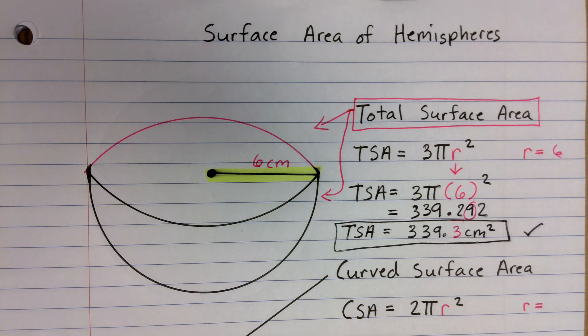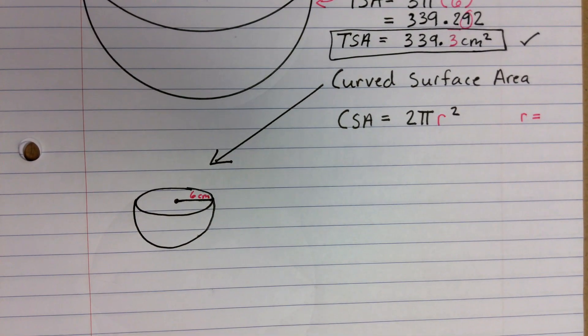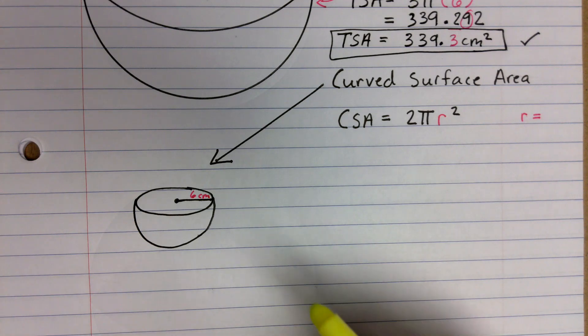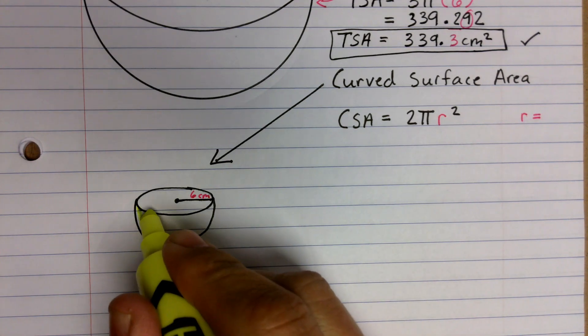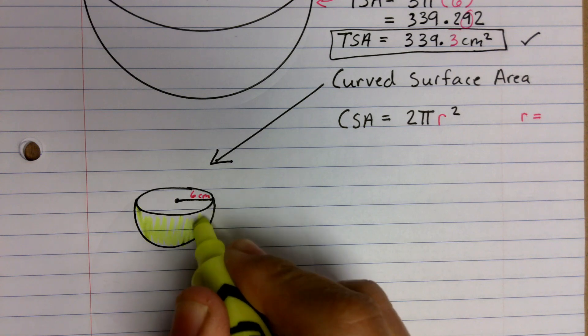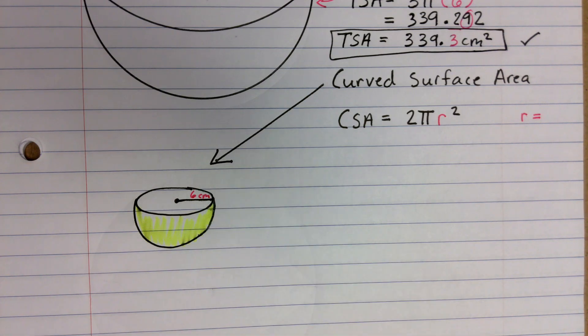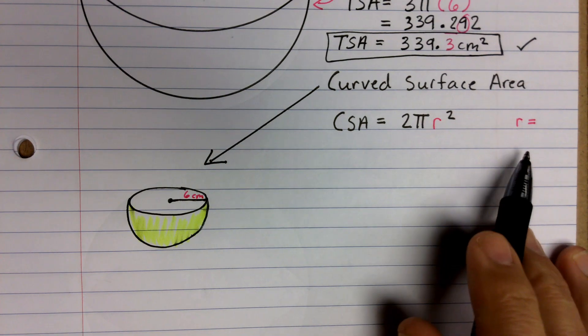So now let's look at a situation where they just asked us to find the curved surface area. So they don't want the total surface area, but the curved surface area. So if that were to occur, and when we say curved surface area, we're just talking about this part right here. So if you just needed that curved surface area, then we would use this formula.